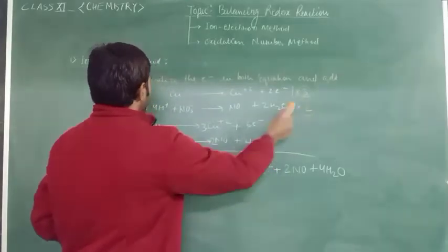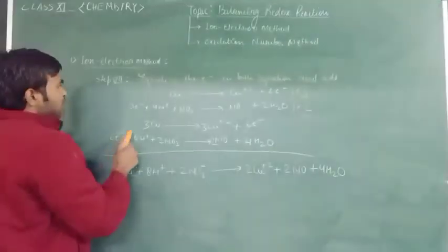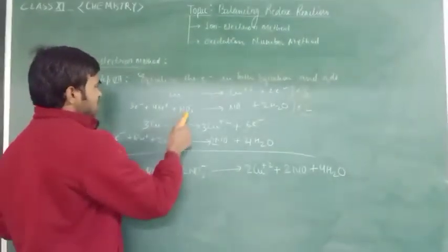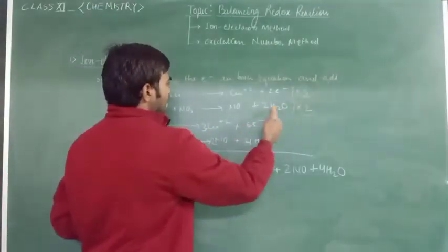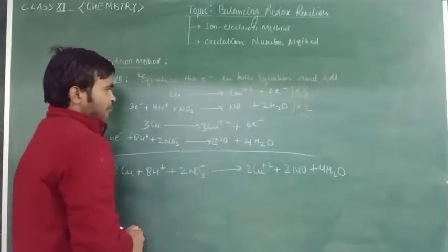By multiplying by 2 in the reduction equation, it will be 6 electrons plus 8H⁺ plus 2NO3⁻ gives 2NO plus 4 water molecules.